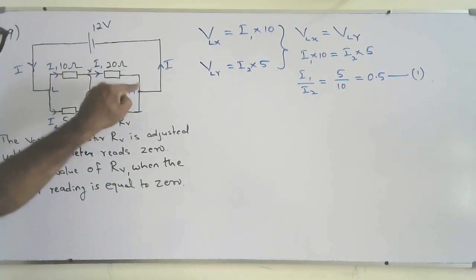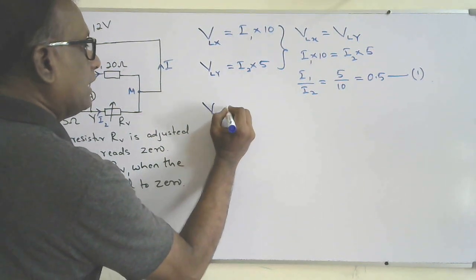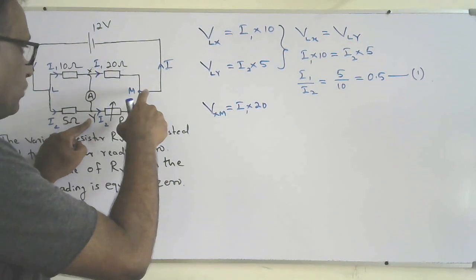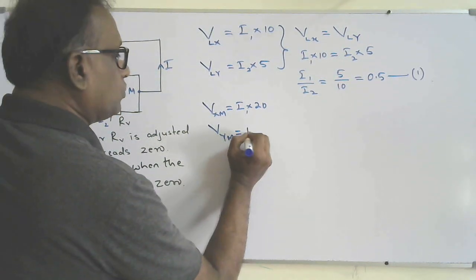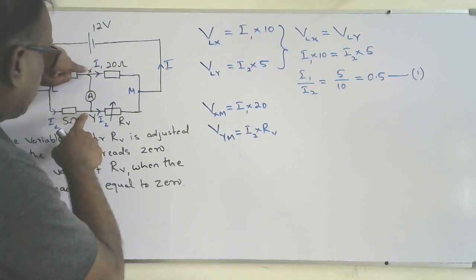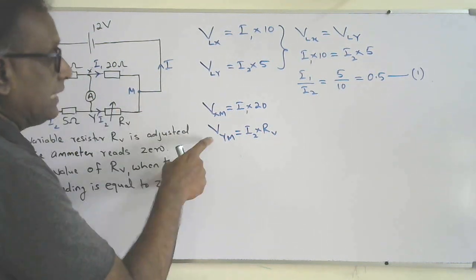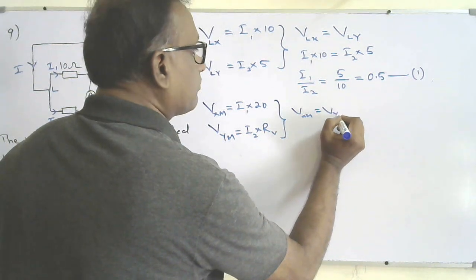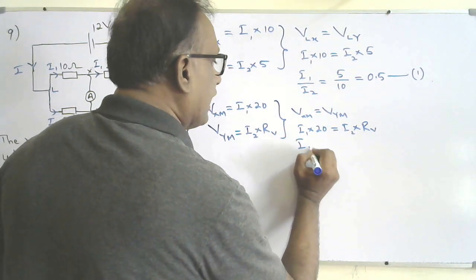Now, from X to M current flows due to the potential difference between X and M, so V_XM equals i1 times 20. Similarly, current flows from Y to M, so V_YM equals i2 times Rv. Since the potential difference between X and Y is zero, M is the common point, so V_XM equals V_YM. Therefore i1 times 20 equals i2 times Rv, giving i1 over i2 equals Rv over 20. That's the second equation.